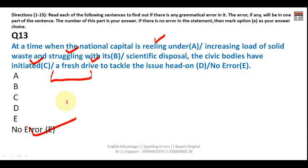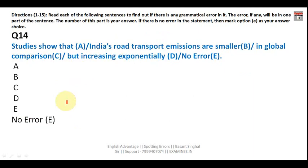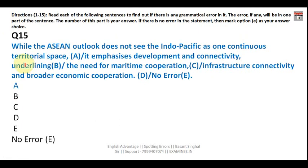Question fourteen: 'Studies show that India's road transport emissions are smaller in global comparison but increasing exponentially.' A comparative degree adjective like 'smaller' should be followed by 'than,' but here no comparison target follows. The correct word should be 'small' — they are small in global comparison. The answer is Part B.